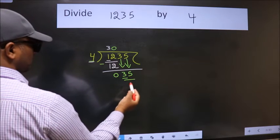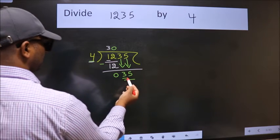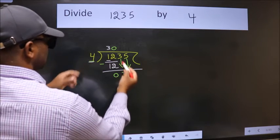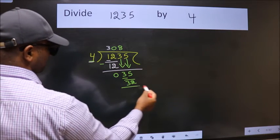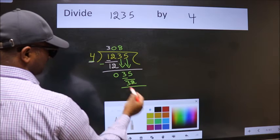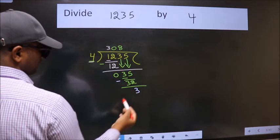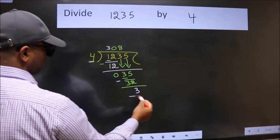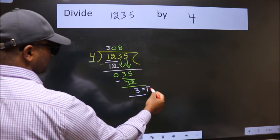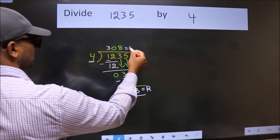So 35. A number close to 35 in the 4 table is 4 times 8, which is 32. Now we subtract. We get 3. No more numbers to bring down. So we stop here. This is our remainder, and this is our quotient.